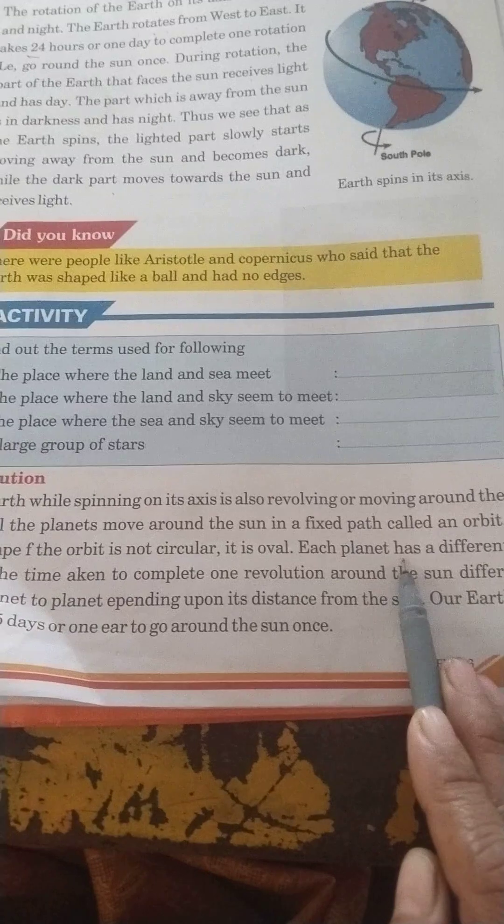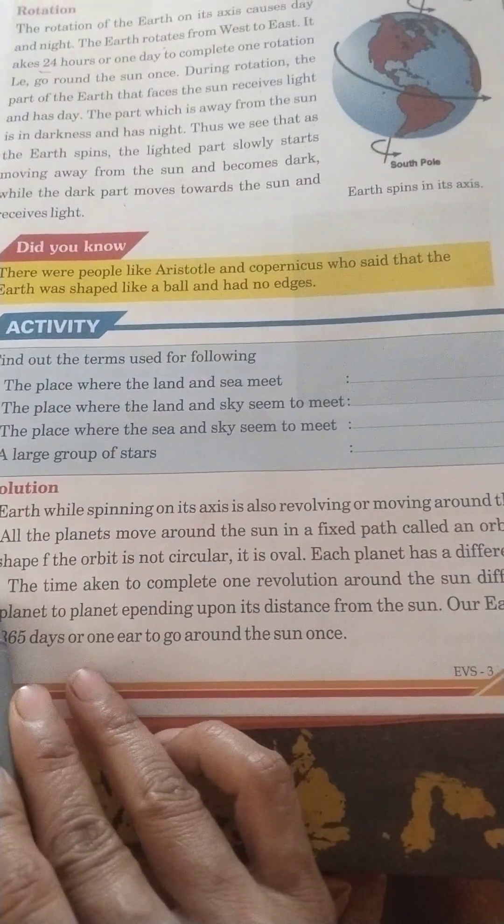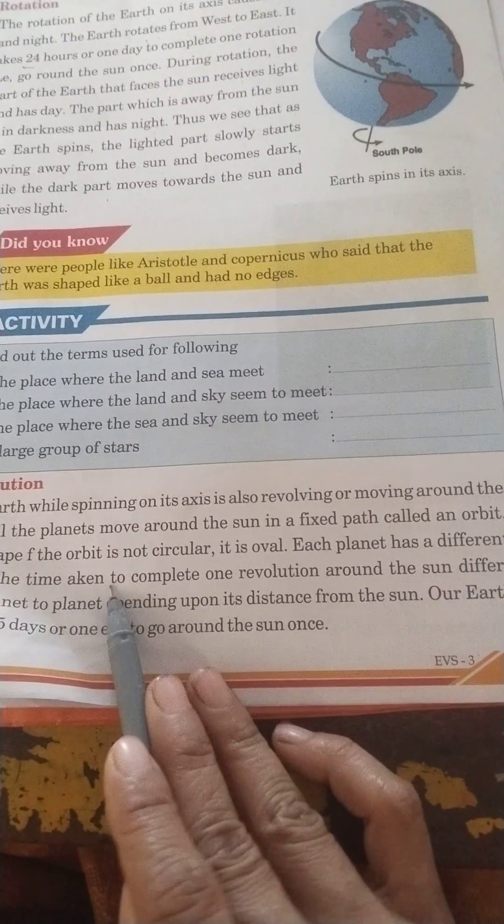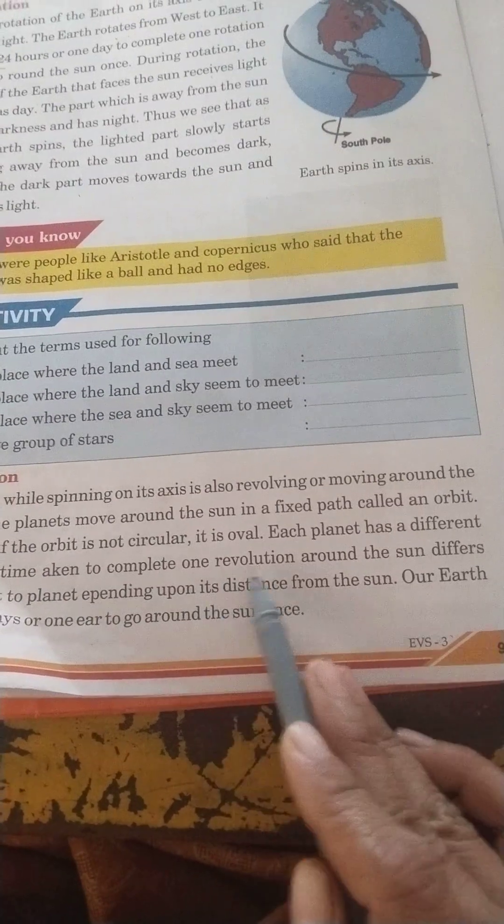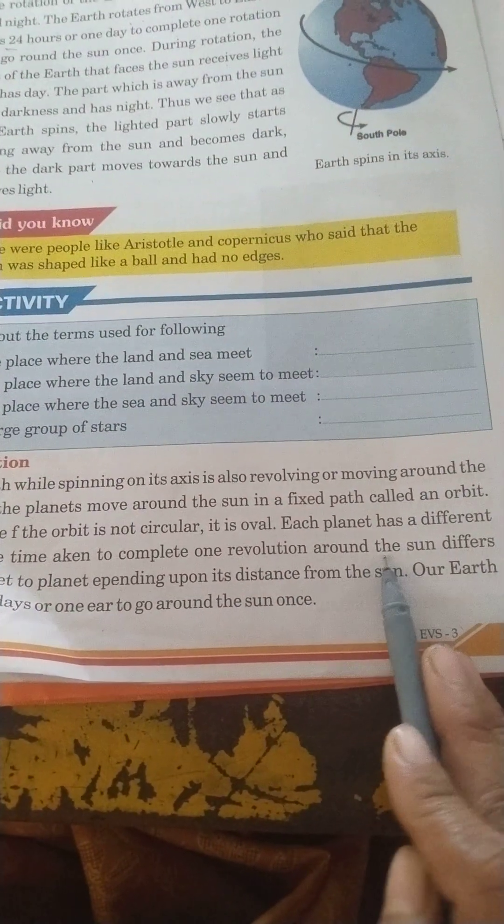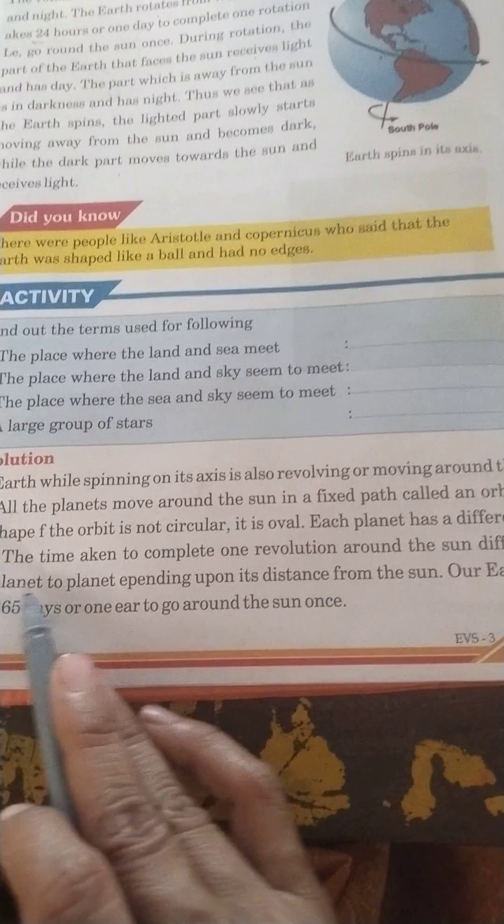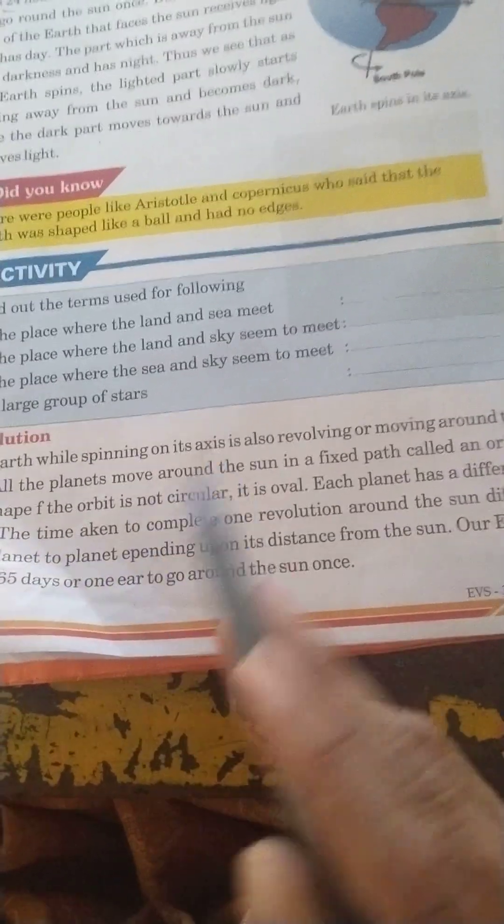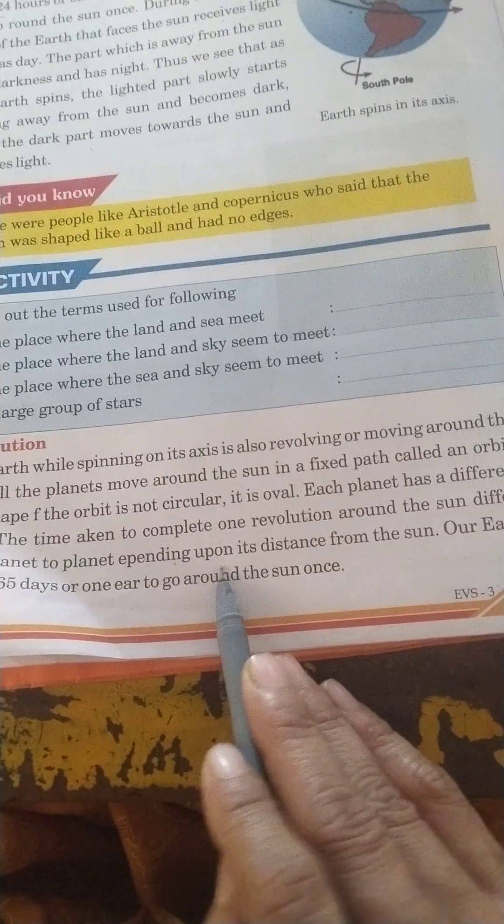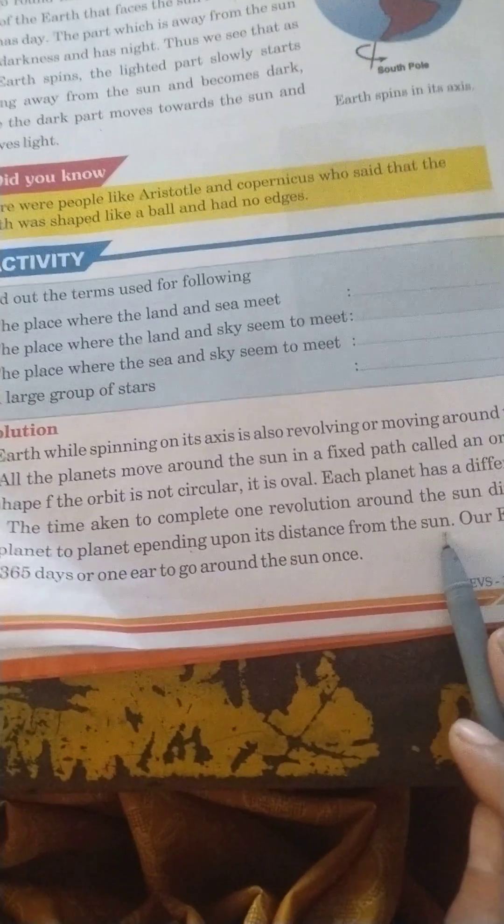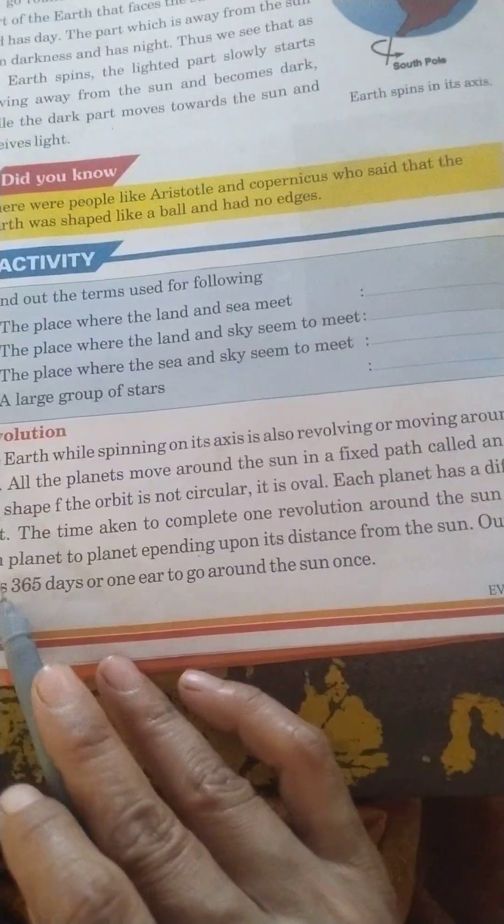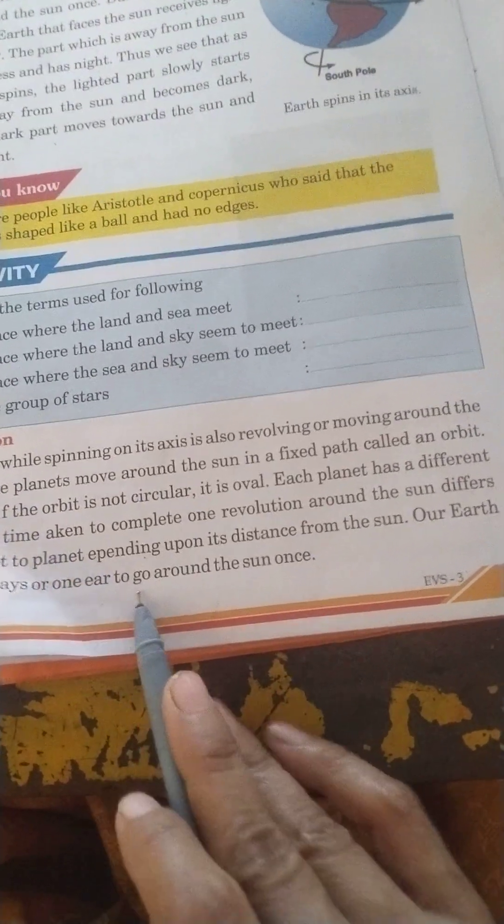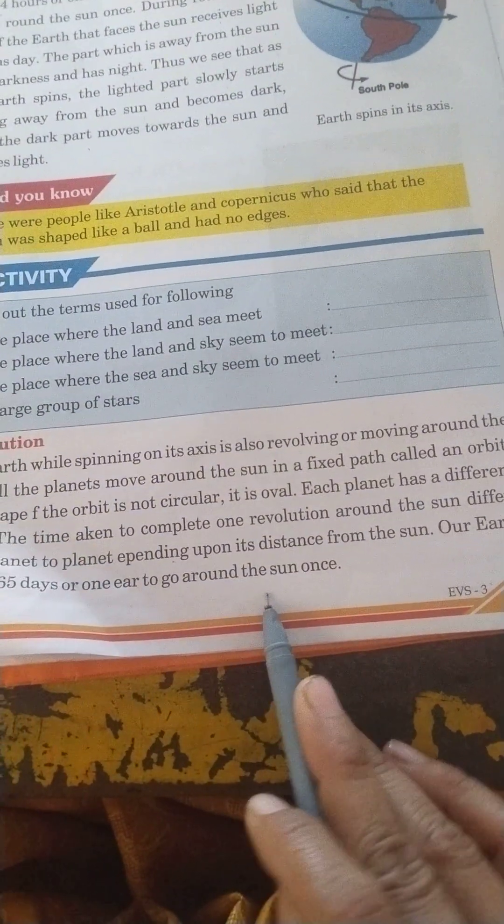Each planet has a different orbit. The time taken to complete one revolution around the sun differs from planet to planet depending upon its distance from the sun. Our earth takes 365 days or one year to go around the sun once.